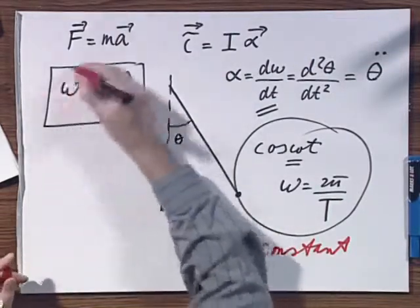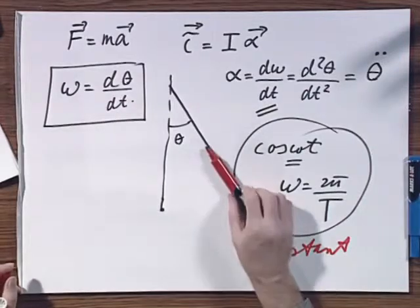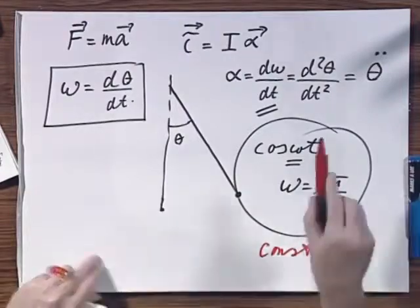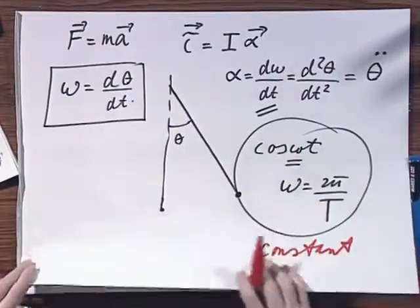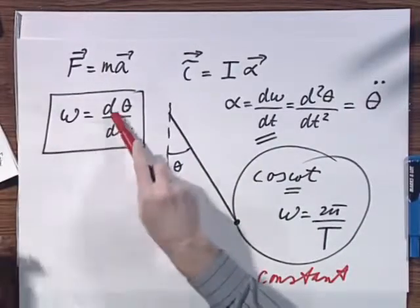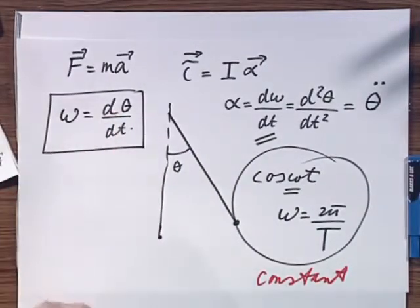This omega is changing all the time. It's zero here, and it reaches a maximum here. So I cannot be specific enough to point out to you that these omegas are very different. Okay, so our alpha is this d²θ/dt².